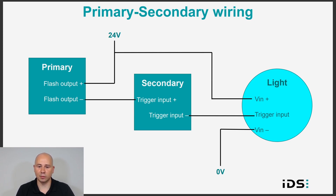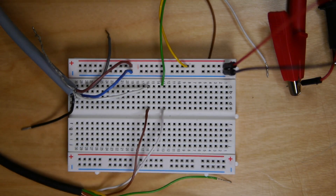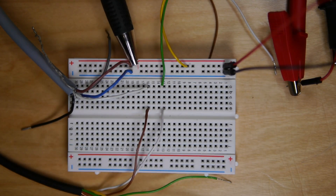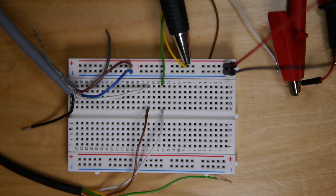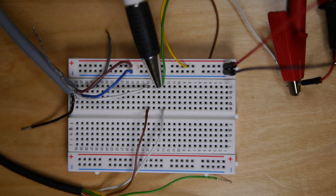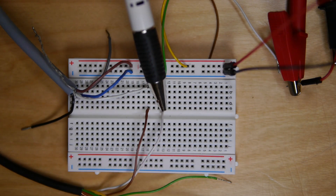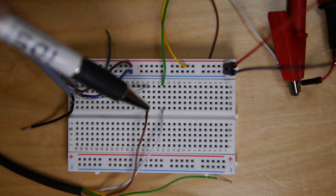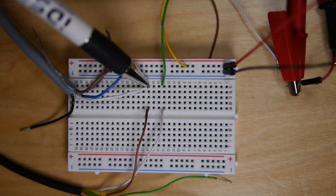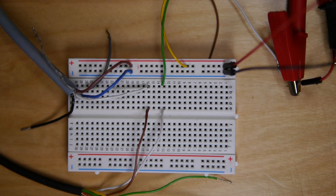Since the secondary camera is getting the signal from the primary, the digital signal generator is no longer needed. I am providing the ring light with 24 volts from the power supply. I also connect the positive flash output of the primary camera to 24 volts. The negative flash output of the primary camera is connected to the positive trigger input of the secondary camera. Then the negative trigger input of the secondary camera is connected to the trigger input of the light, which is then connected to 0 volts.